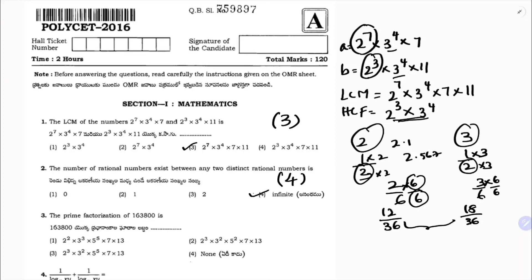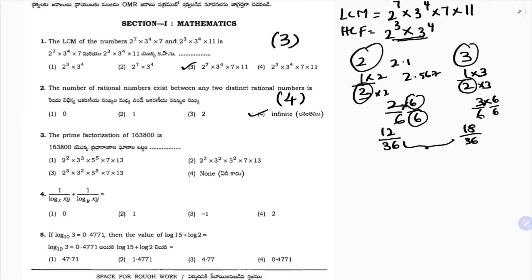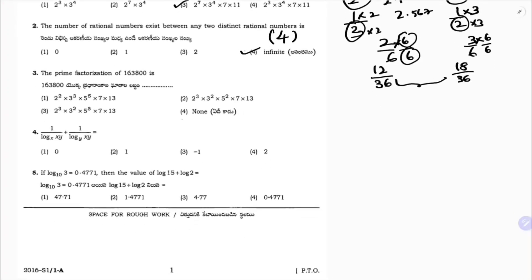Third question: the prime factorization of 163800. We start dividing by 2: 163800 divided by 2 gives 81900, then 40950, and then 20475.